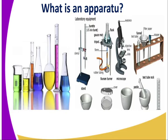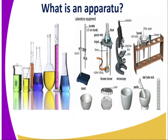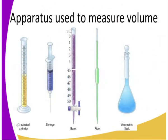So what is an apparatus? It is basically an instrument that we are going to use in making readings or in the laboratory. We have different types of apparatus: apparatus used to measure volume, apparatus used as a source of heat, and apparatus that can be used to measure time, mass, and general laboratory apparatus. We'll look at each of them one at a time.